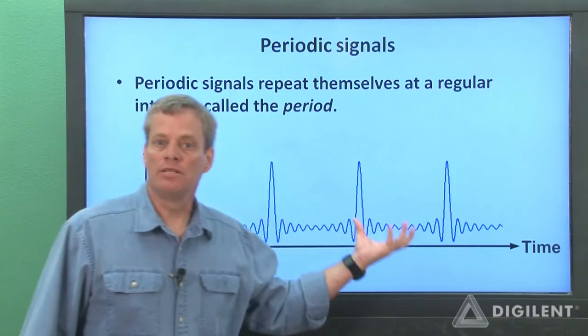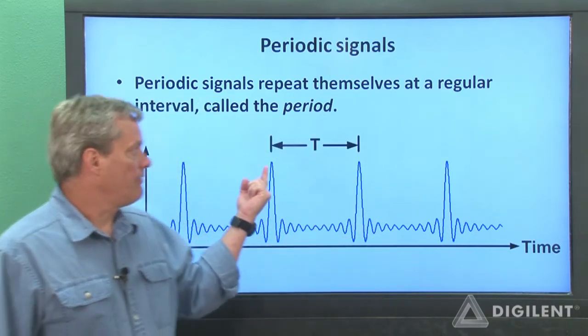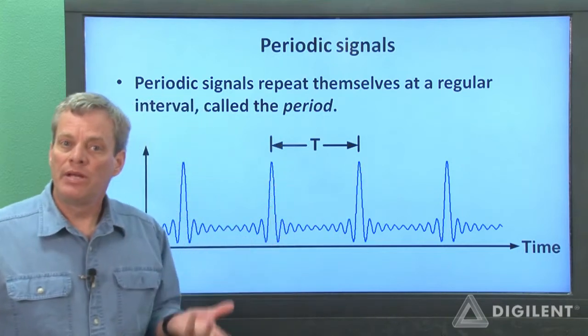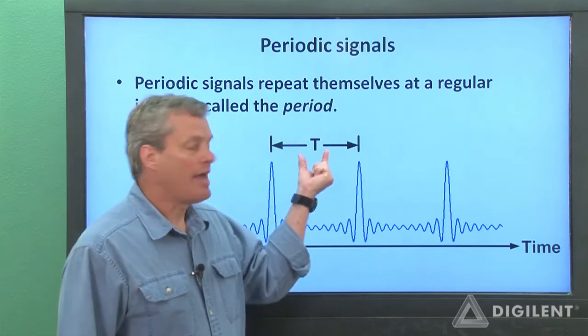For example, this signal is periodic. The signal repeats itself at this rate. The period of a signal is generally denoted by a capital T.